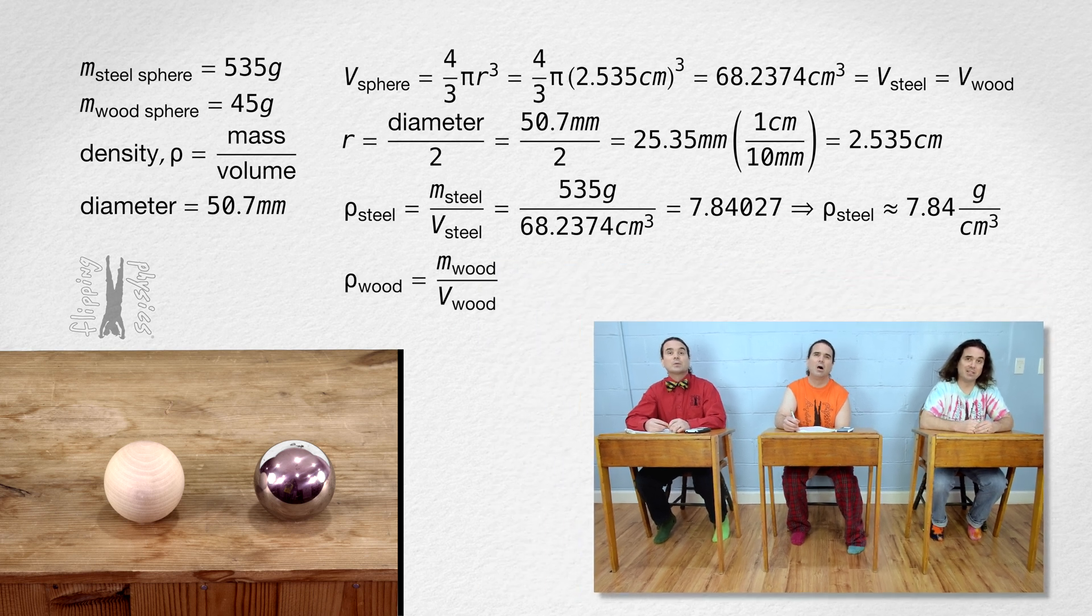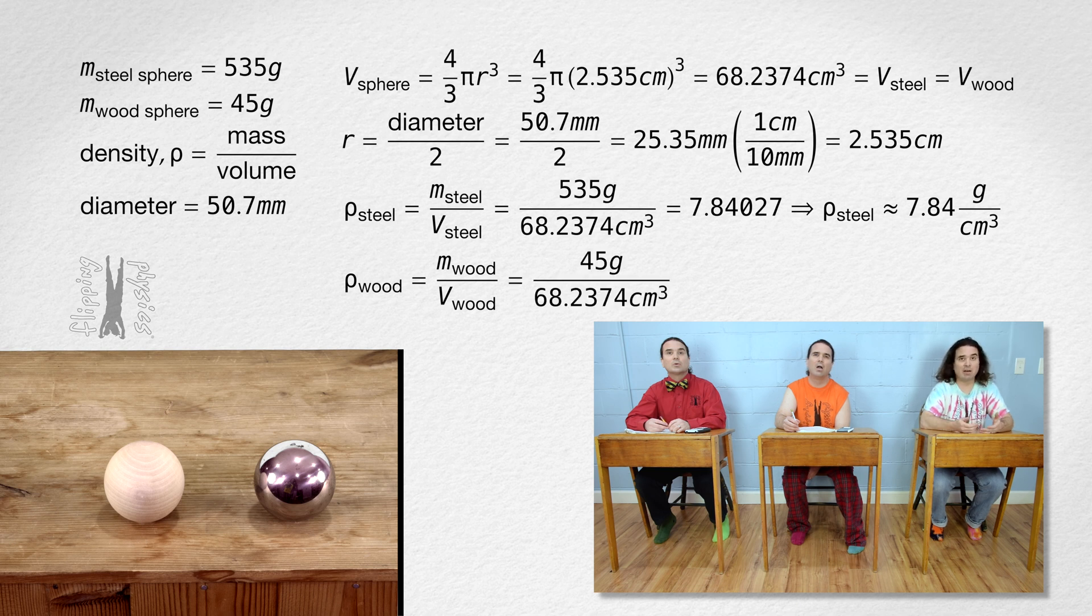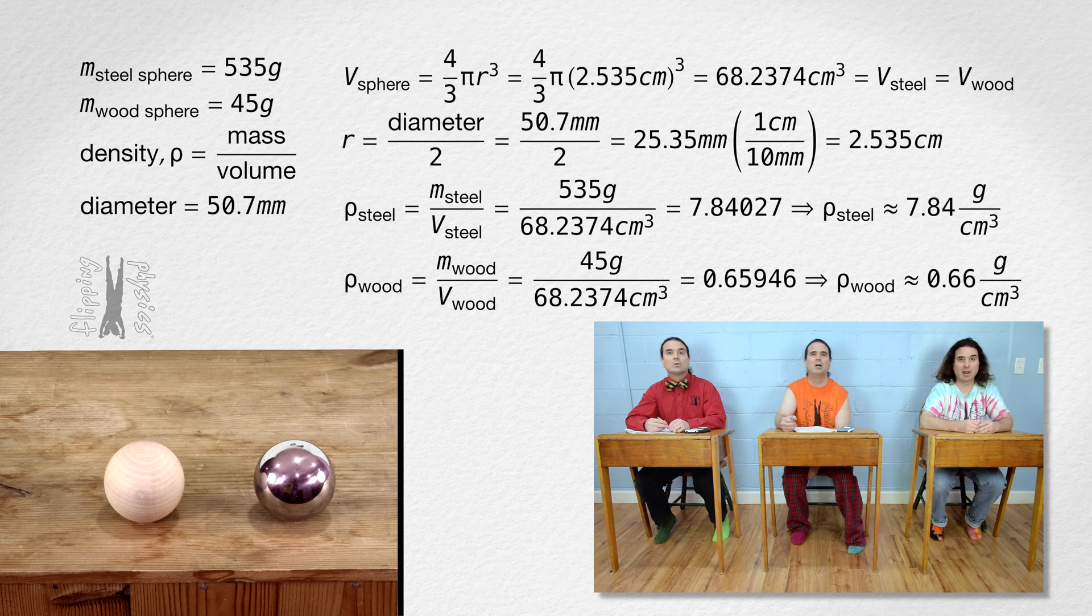And the density of the wood sphere equals the mass of the wood sphere over the volume of the wood sphere, or 45 grams over the same volume, which equals 0.65946, or approximately 0.66 grams per cubic centimeter. Great. Thank you, Bo.